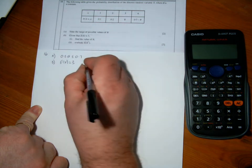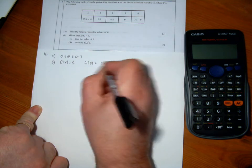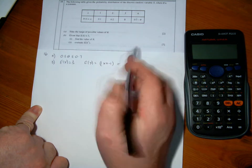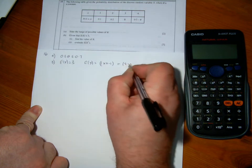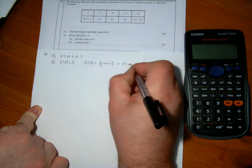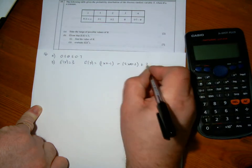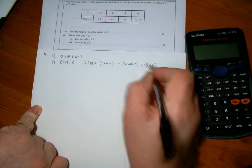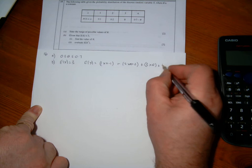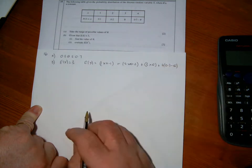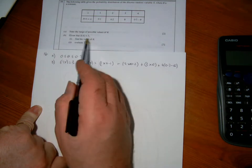So to calculate E(X) from the table, that will be 1 times 0.1, plus 2 times 0.2, plus 3 times theta, plus 4 times 0.7 minus theta. So that's the calculation of E(X) from the table. I'm told when I work this out that it has a value of 3.